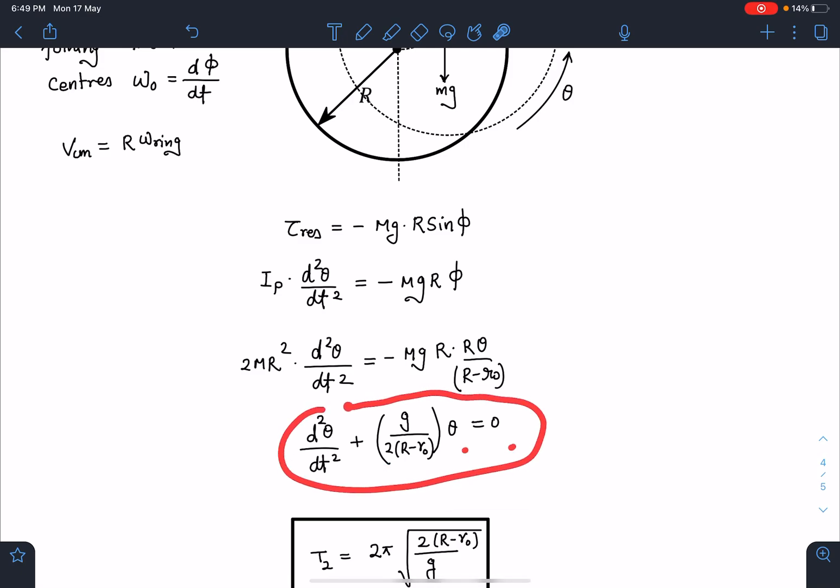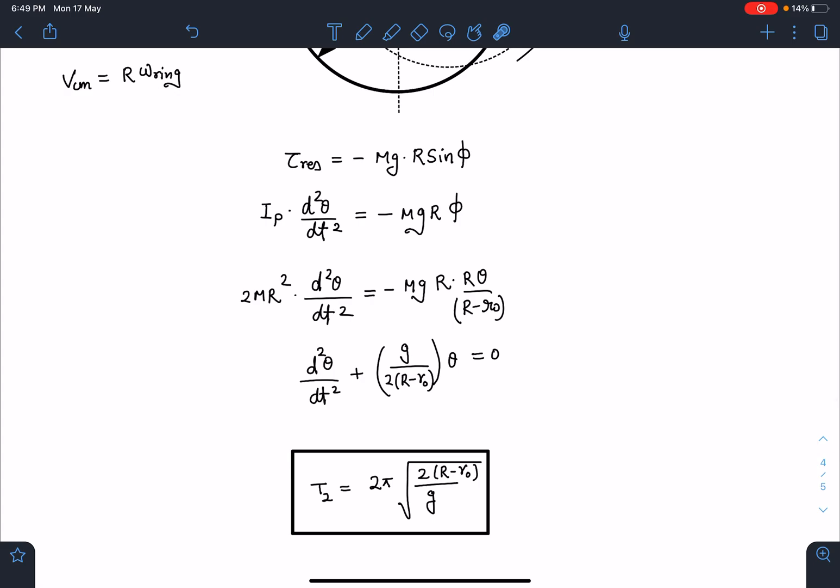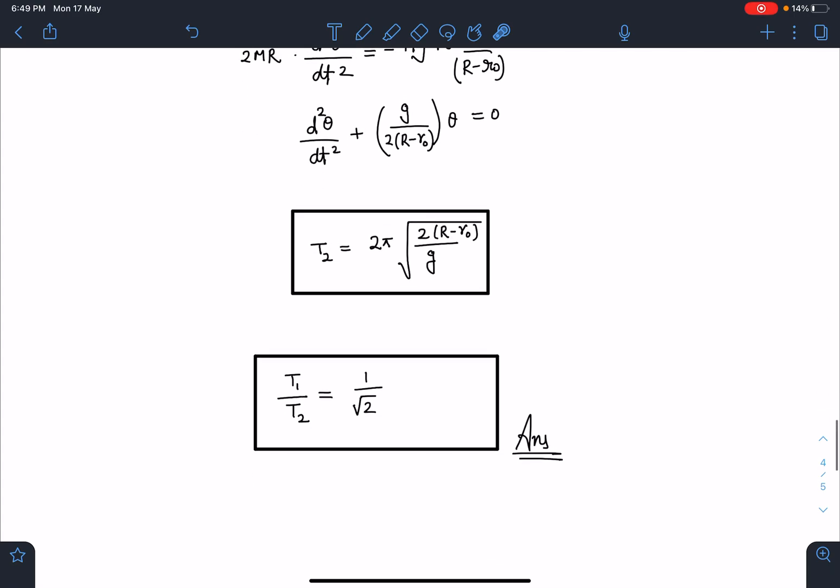So time T2 is going to come as 2π√[2(R - R0)/g]. And T1/T2 ratio is going to be 1/√2. And it is independent of the values of radius. So this is going to be the final answer.